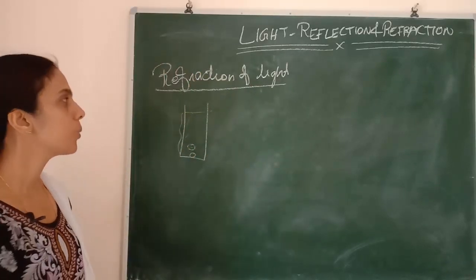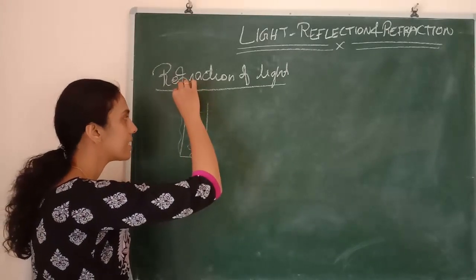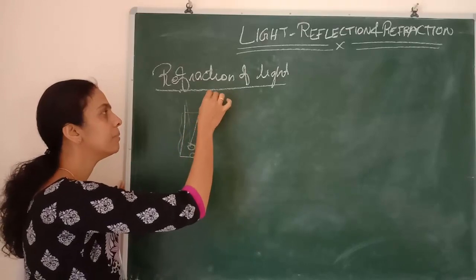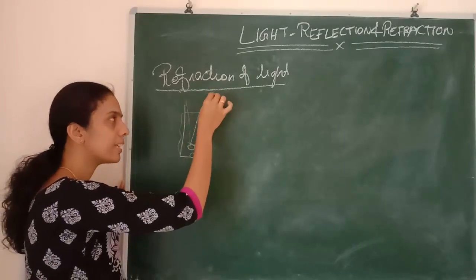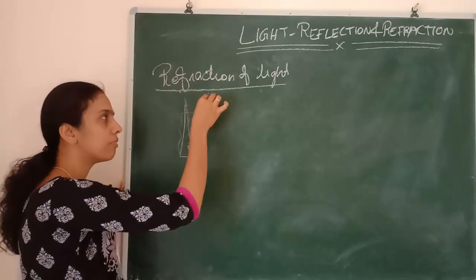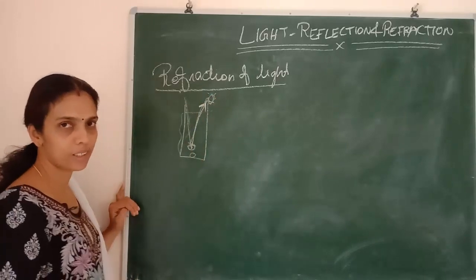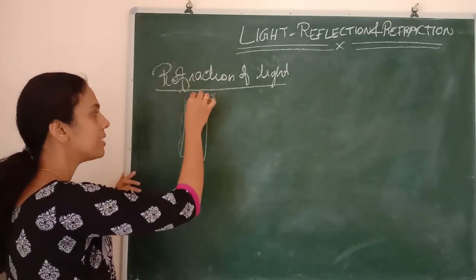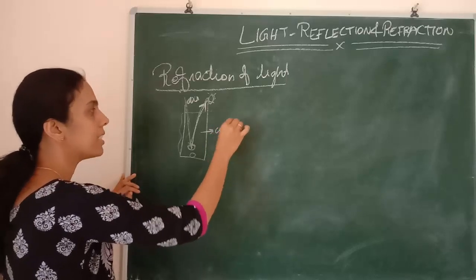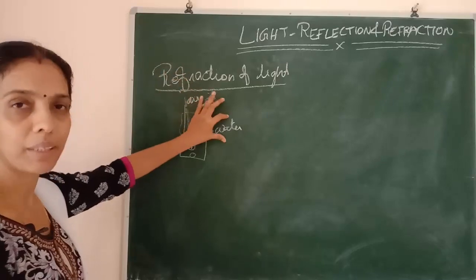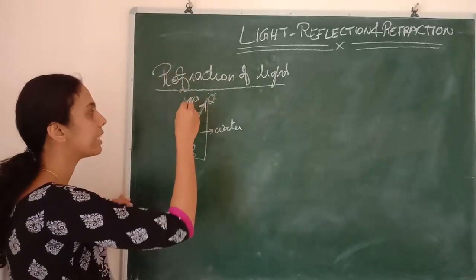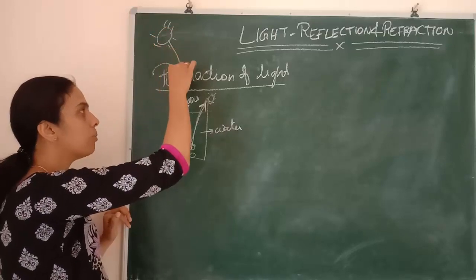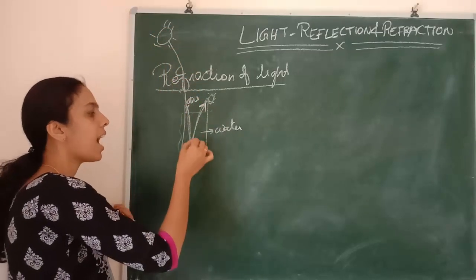If we are seeing this object, the light ray is incident here and we are standing here. The light ray should fall on the object, reflect, and come back to our eye. The light is passing through different media — air is one medium and water is another medium. From the sun, light passes through vacuum, then air, then falls on water and comes back to us.